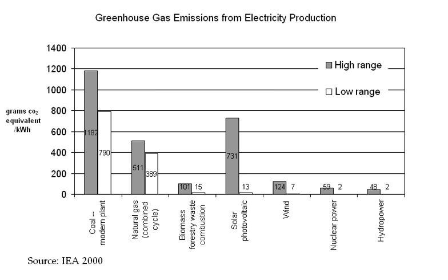Another consideration is how future socio-economic development proceeds. Development choices can lead to differences in GHG emissions. Political and social attitudes may affect how easy or difficult it is to implement effective policies to reduce emissions.